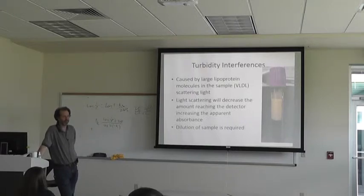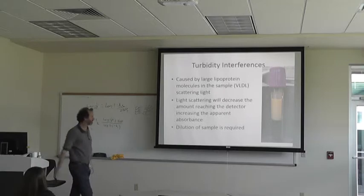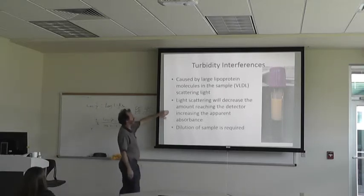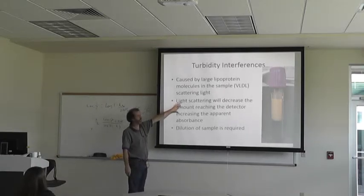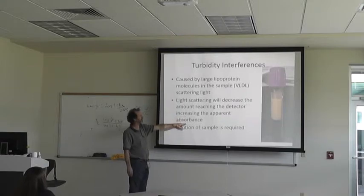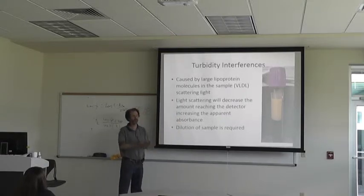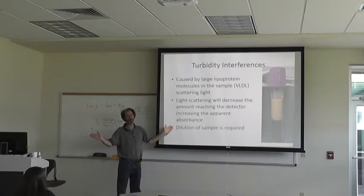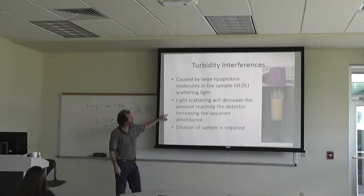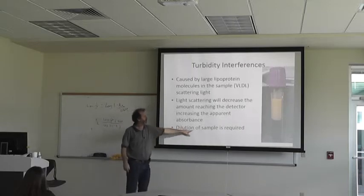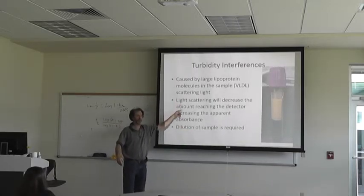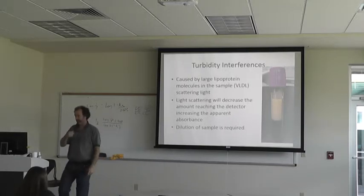This is going to cause a lot of light scattering, which is going to decrease the amount reaching the detector, or increase the apparent absorbance, or increase the apparent fluorescence too, because it's scattering the light shining on it and scattering to the side. What you want to do with samples like this is dilute them down to where the scatter either goes away or is not significant.